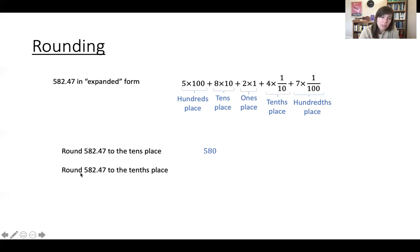So now let's look at this number and let's say let's round 582.47 to the tenths place. Well, that's the four. And again, you look at the digit to the right. If it's zero through four, you leave the tenths place alone and make everything to the right zero. And if the digit to the right is five through nine, you add one to the original place, and then you make everything to the right zero.